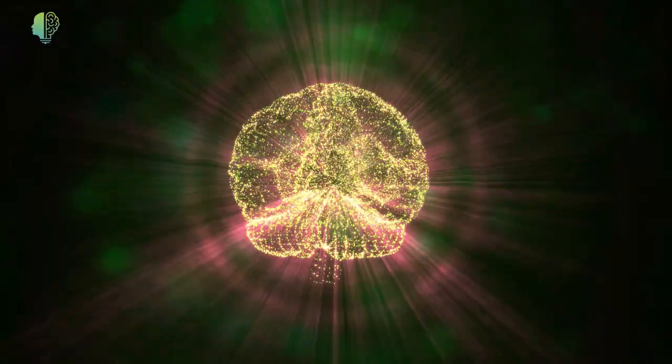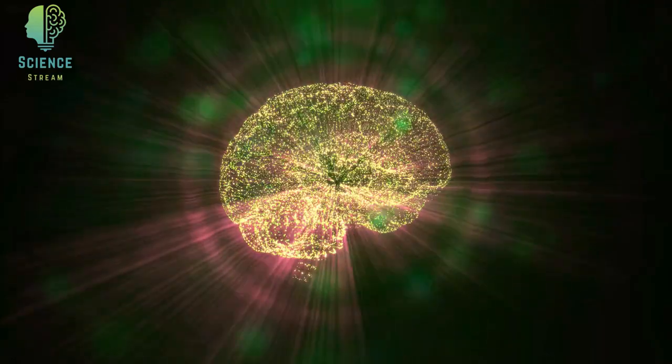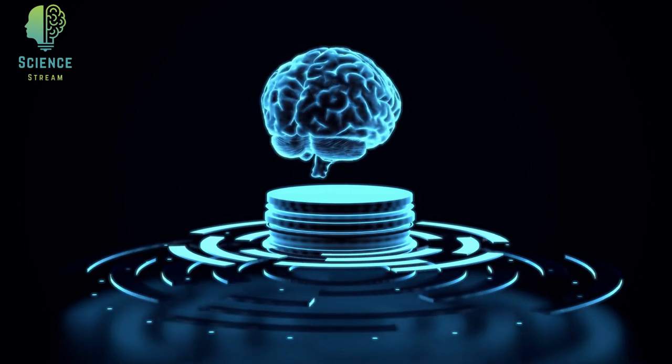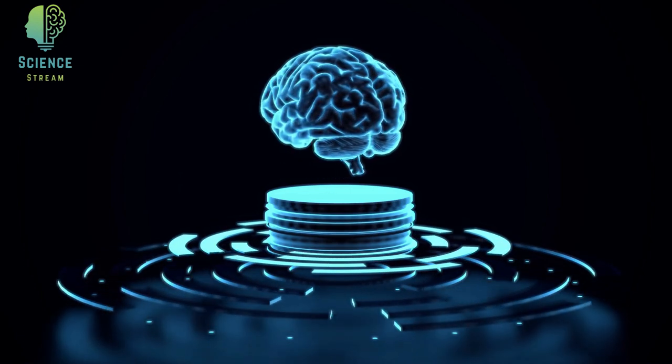Storage. In the storage stage, the brain organizes, encodes, and stores the information for future use. However, the brain may forget the information stored over time if it's not reinforced.